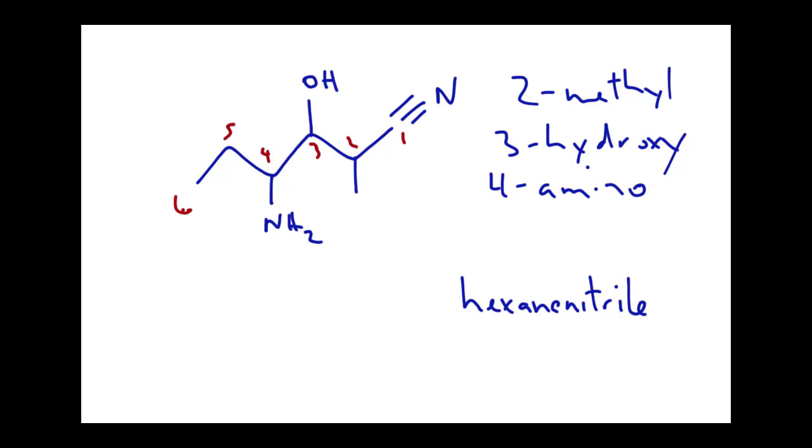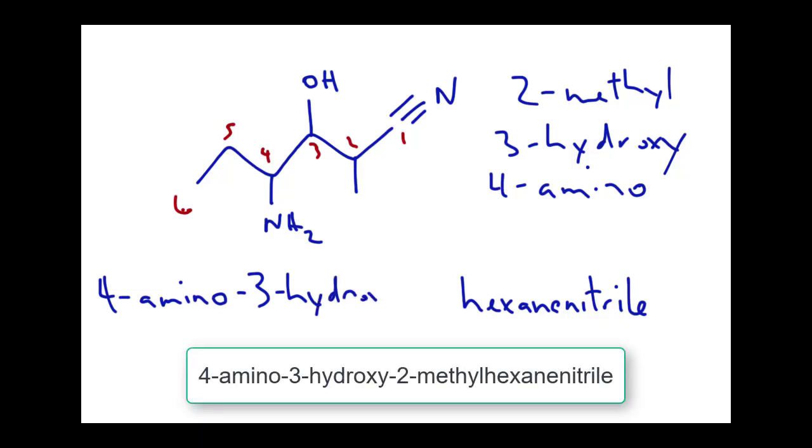So if we write this out alphabetically, I want the four amino to come first. The hydroxy will come next. I didn't save myself room, so we're going to go up here, 2-methyl hexane nitrile, so 4-amino-3-hydroxy-2-methyl hexane nitrile.